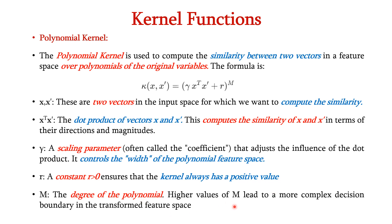Higher values of M lead to a more complex decision boundary in the transformed feature space. So if the number of features is less, we can go for the polynomial kernel.